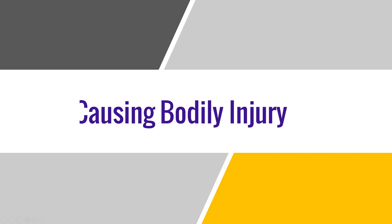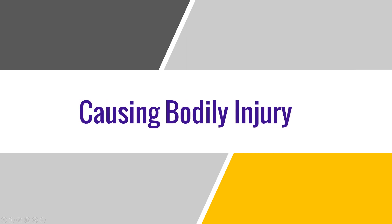The third essential is causing bodily injury that the offender knows is likely to cause death. The word 'likely' is used here, where an offender inflicts a bodily injury on a person which would result in death. But because the same essential is also available in culpable homicide, the difference is that the degree of probability of death will be high in murder and low in culpable homicide — meaning the chances of causing death by bodily injury are higher in murder.